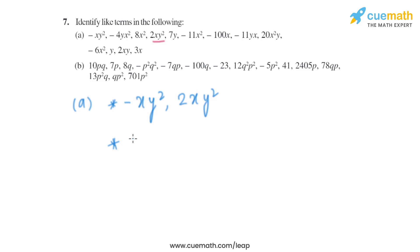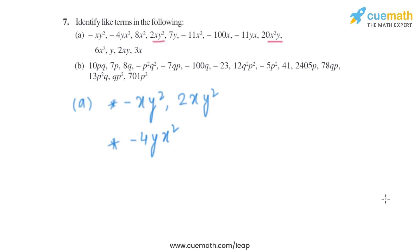Now let's move on to the next term, which is minus 4YX square. The variables are Y and X, so we'll find a term with the same variable and same power, which is 20X square Y. As we can see, in 20X square Y the variables and powers are the same, so they are like terms.